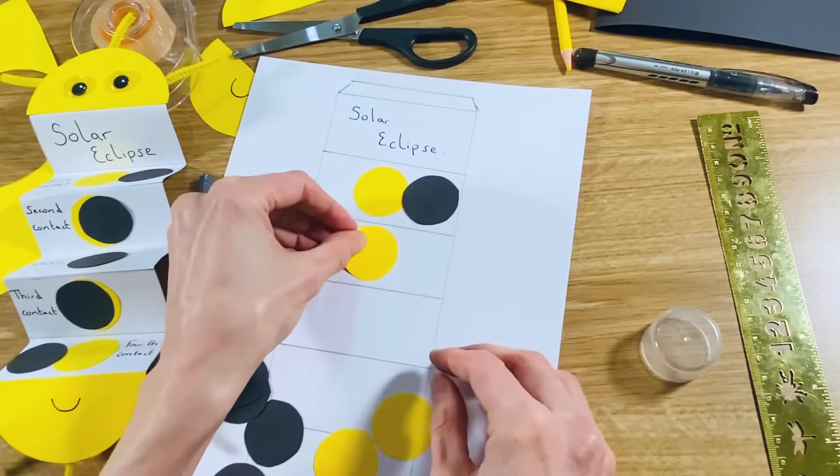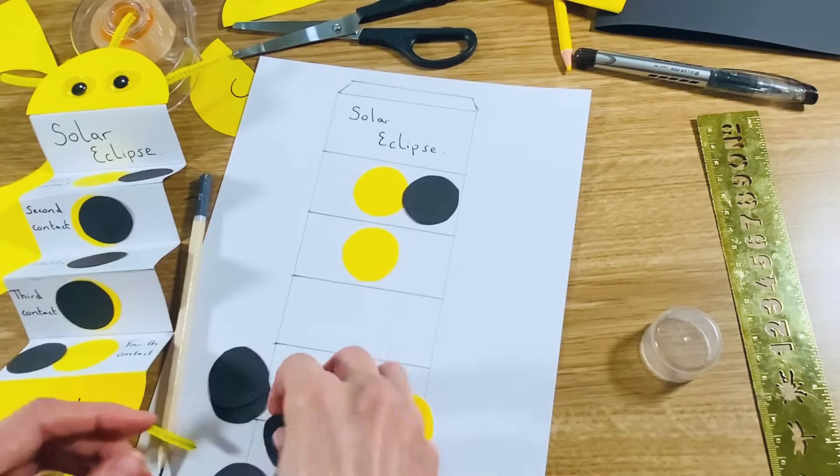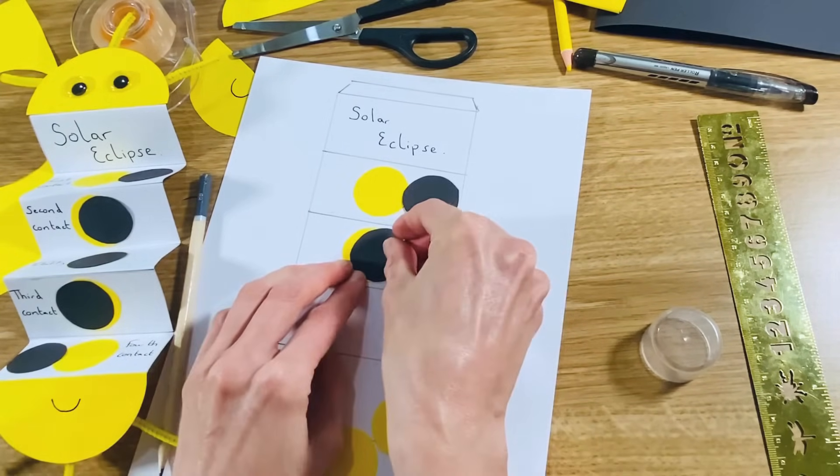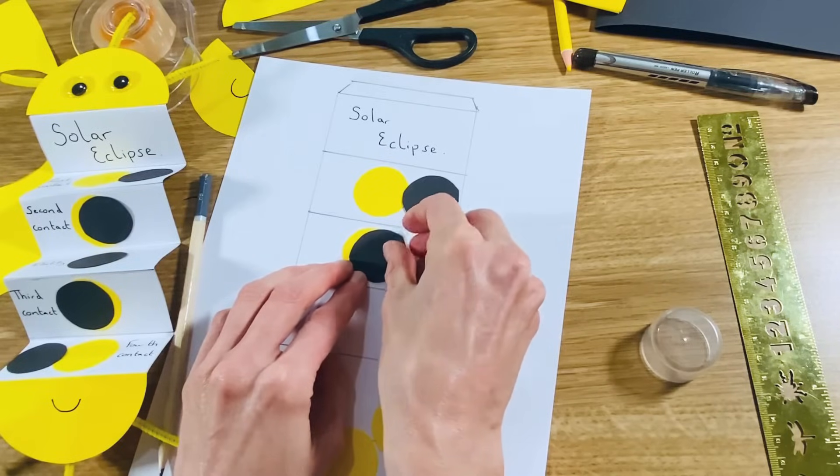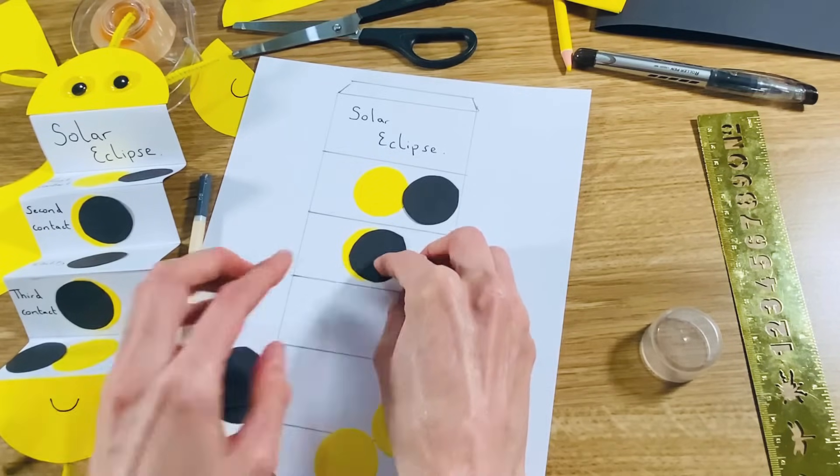Second stage, sun's in the same place, the moon is now covering almost all of the sun, so you've just got this very thin crescent there.